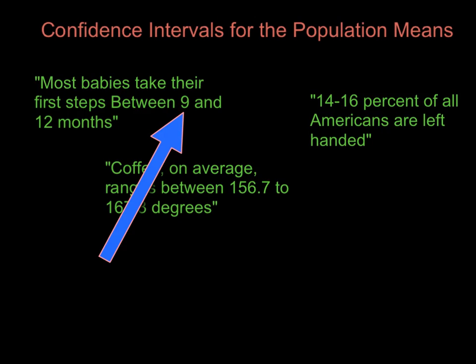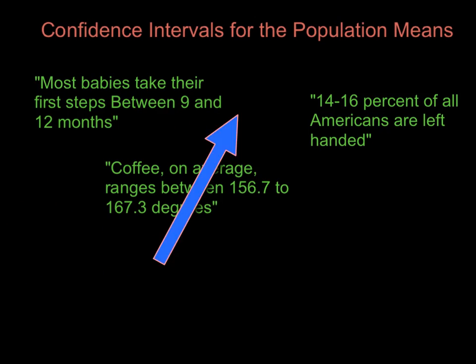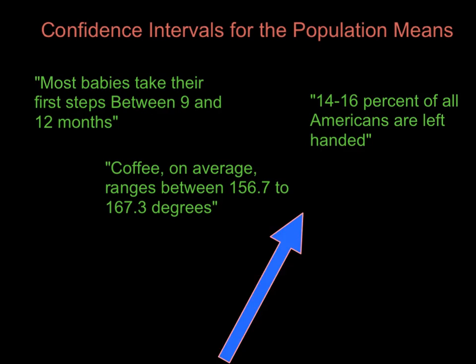They've added something called a margin of error and they've subtracted it and they've given you a low number and a high number. And they're saying the population, the population of all babies falls somewhere between these two numbers.